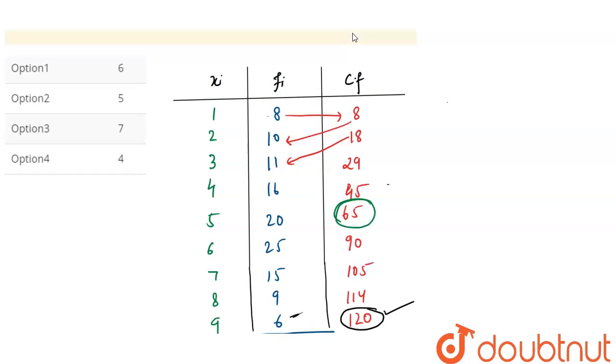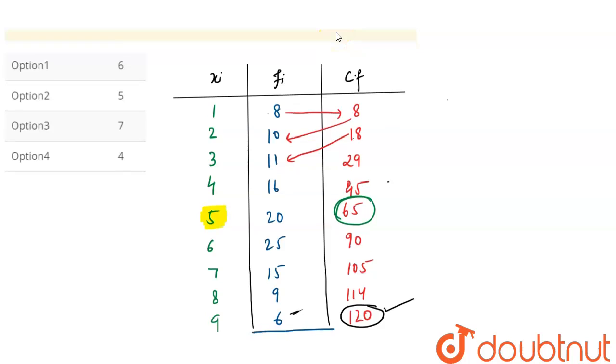And we will take that value which is corresponding to 65 in xi. So in xi corresponding to 65 is 5, so our median is 5.